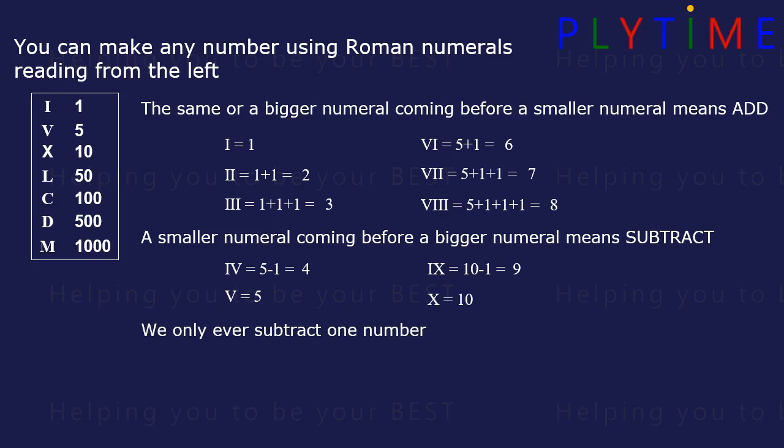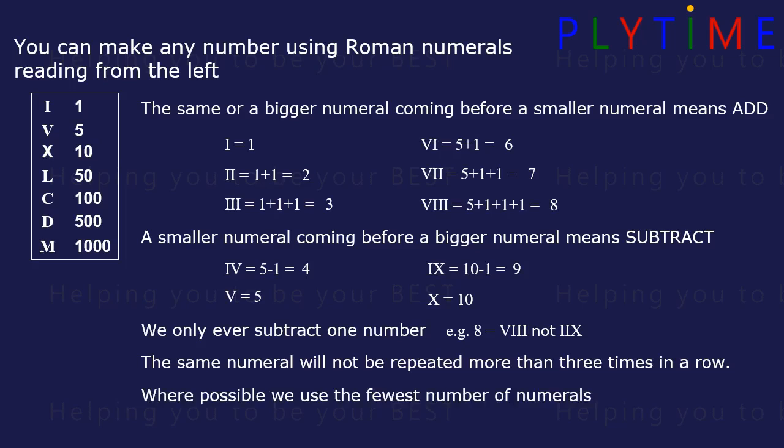We only ever subtract one number. For example, 8 is VIII, not IIX. The same numeral will not be repeated more than three times in a row. Where possible, we use the fewest number of numerals. For example, for 15, we'd use XV, not VVV.